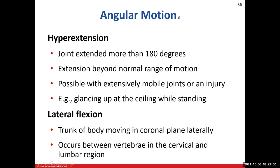Lateral flexion involves body parts moving within the coronal plane. It's typically used for the cervical and lumbar spine. For example, sliding your hand down toward your knee while leaning to the right at the waist is right lateral flexion; leaning to the left is left lumbar lateral flexion.